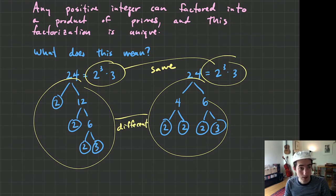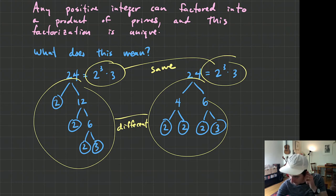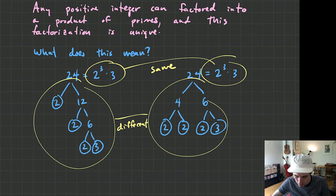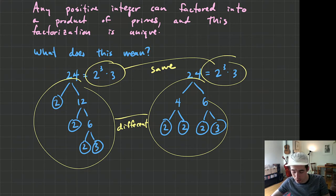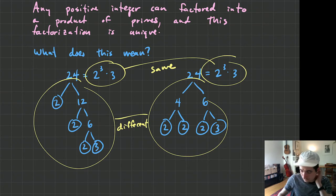These are the same, even though our factor trees are different. That makes factor trees a great tool to use — they are super powerful because it does not matter which order you choose your factors. You can start off with a 2, a 4, an 8, or a 3 — it really doesn't matter. You'll get the same prime factorization. That's what the Fundamental Theorem of Arithmetic is.